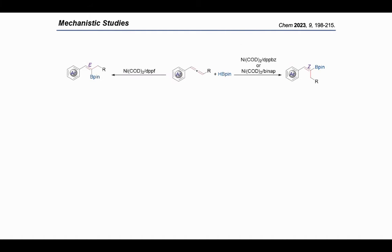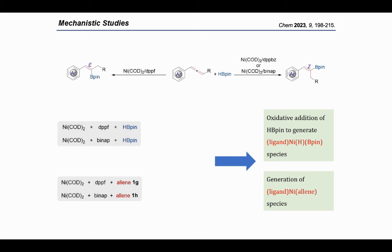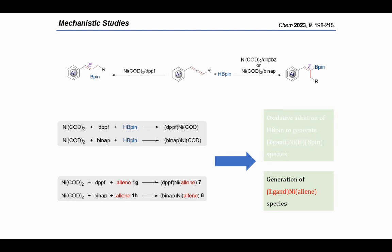The next and the most important part is the mechanistic studies. First of all, we want to know more about the initial steps. Generally speaking, there are two possibilities. HB-pin is involved in the initial step to generate oxidative addition species, or allene was involved in the initial step to generate nickel-allene complex. So, we conducted the reaction between HB-pin or allene with catalyst. As a result, HB-pin cannot react with the catalyst. The product of this reaction is the ligand-coordinated nickel-COD complex. In contrast, allenes can react with catalyst to generate ligand-coordinated nickel-allene complex. So, the possibility of HB-pin is involved in the initial step can be excluded. The initial step should occur among nickel precursor, ligand, and allene.